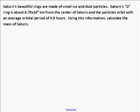The rings are lettered, and the D ring is about 6.7 times 10 to the 4 kilometers from the center of Saturn. And the particles orbit with an average orbital period of 4.9 hours. We can use this information to calculate the mass of Saturn.